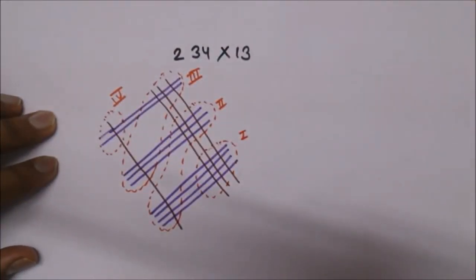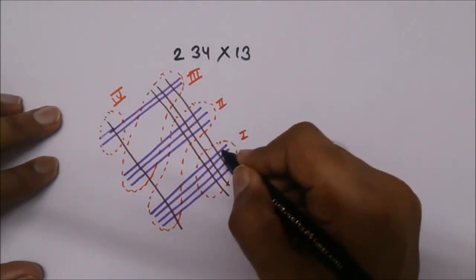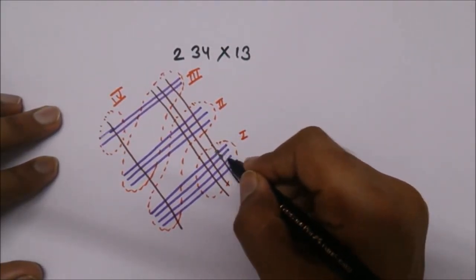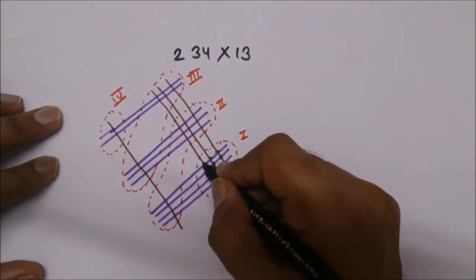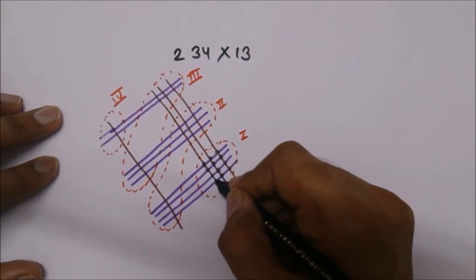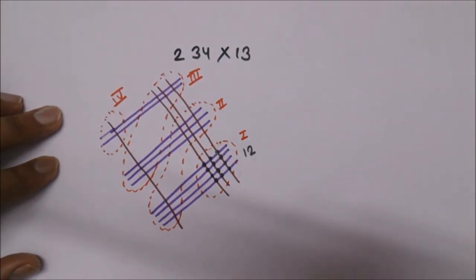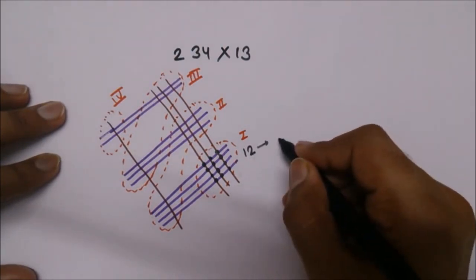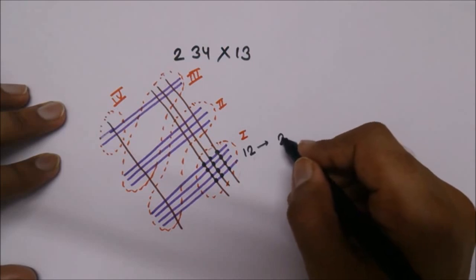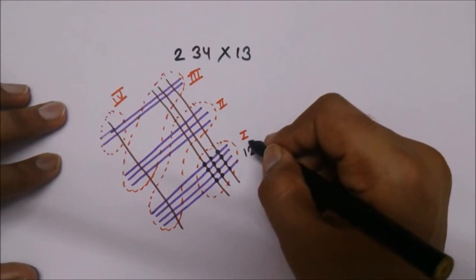Let's count the number of points of intersection in each region. In this first region we have a total of 12 points of intersection. Since this is two digits, we write 2 here and carry the 1 to the next region.